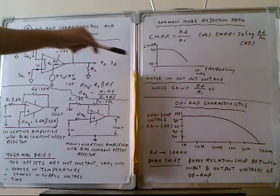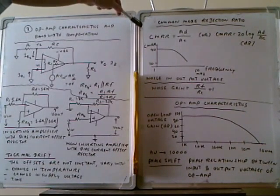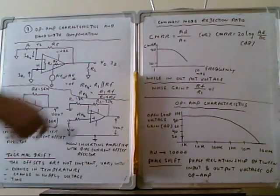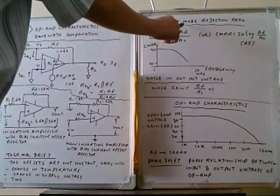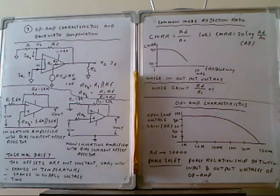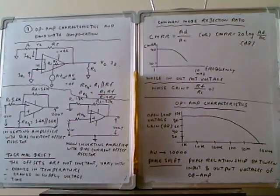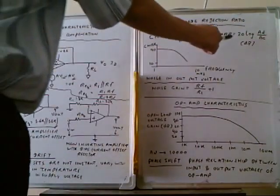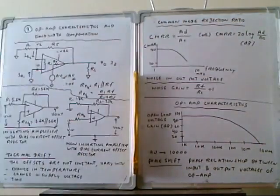The operational amplifier has the capability to reject noise, which is what we call the Common Mode Rejection Ratio, or CMRR. CMRR can be calculated as AD divided by AC — the differential gain divided by the common mode gain. We can also express the gain in decibel form, so CMRR in dB is equal to 20 log of AD divided by AC.